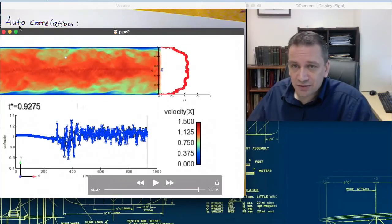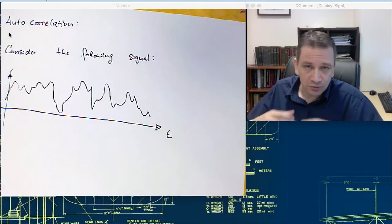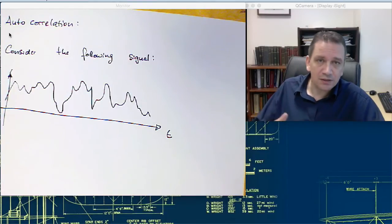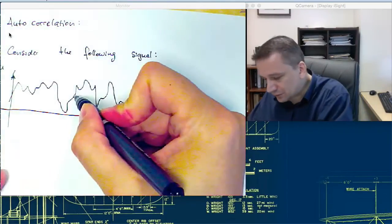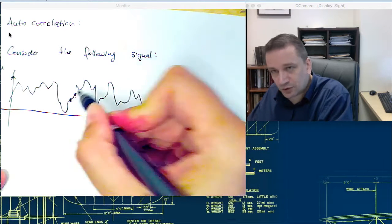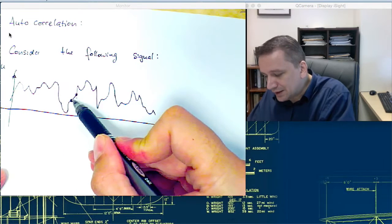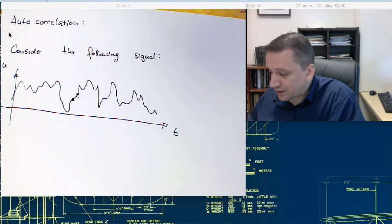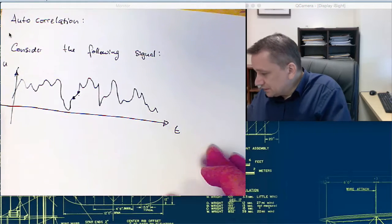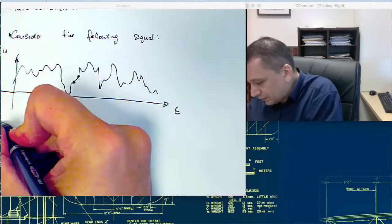So, how can we express that mathematically? That two neighboring points are correlated within time. For example, that this value is somewhat correlated to this value, that there's a certain gradient that cannot jump completely randomly. So, that leads us to the autocorrelation.